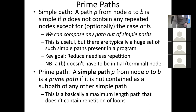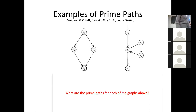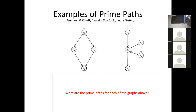We're going to look at some examples from the textbook. Here are two graphs. I'd like you to come up with the prime paths. This one is N0, N1, N2, N3 on the left — let's consider that one first. Can anyone tell me what would be prime paths? Well, let's first come up with simple paths. What are possible simple paths for this one on the left?